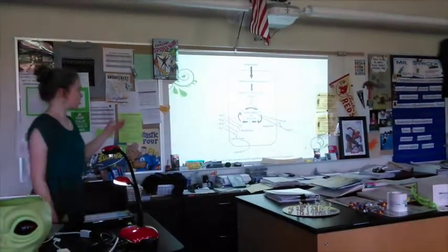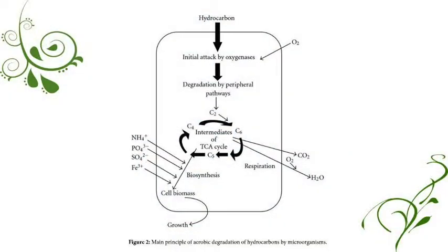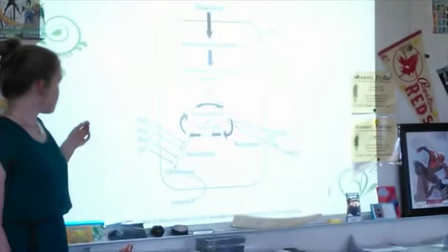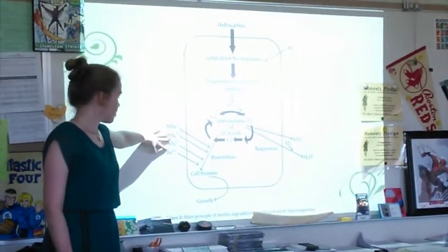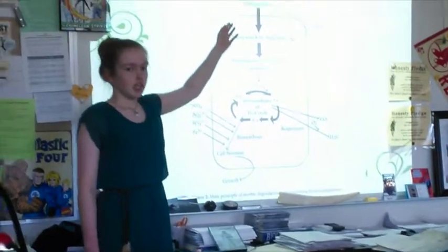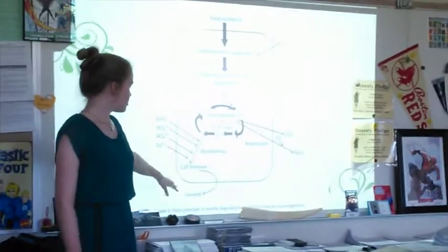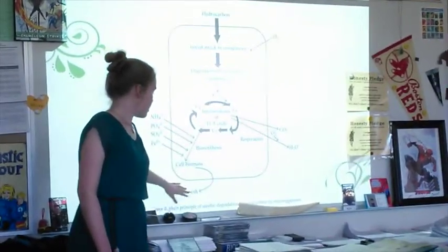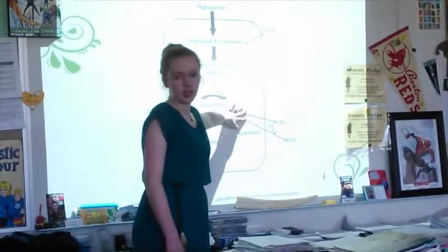This is another diagram. This cycle is called the Krebs cycle, and it is the cycle that all bacteria go through while consuming food. These are the four things they use during the Krebs cycle. At the top is a hydrocarbon, which is like oil or plastic. Down here is what is used in the growth of the bacteria, and CO2 and water are the byproducts.